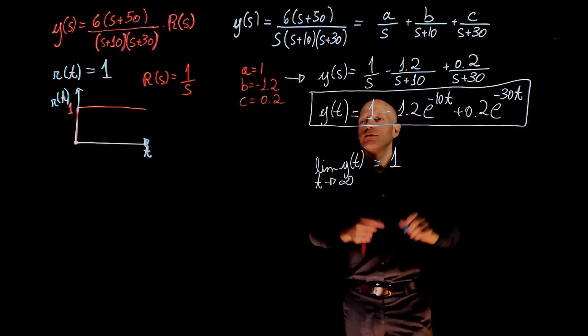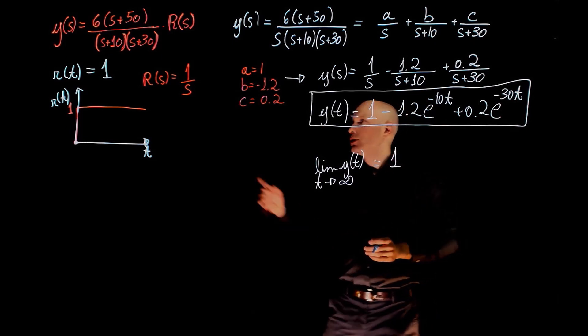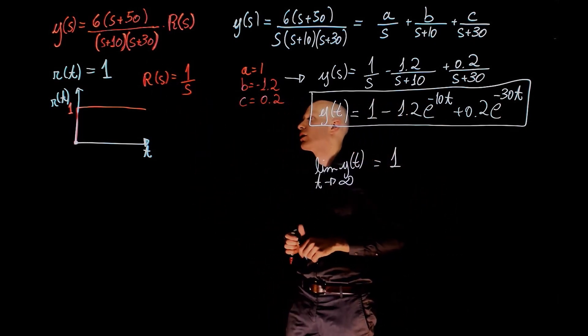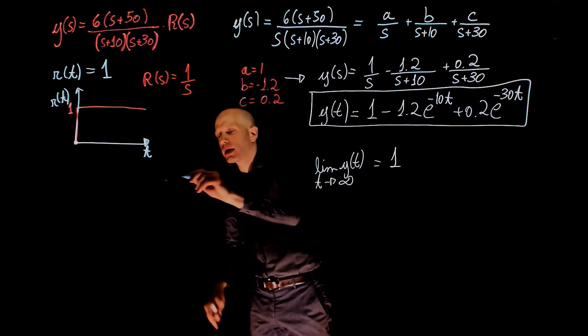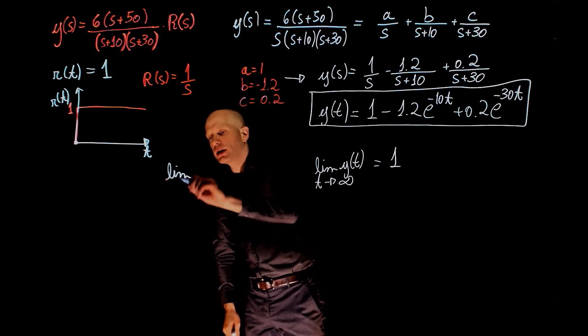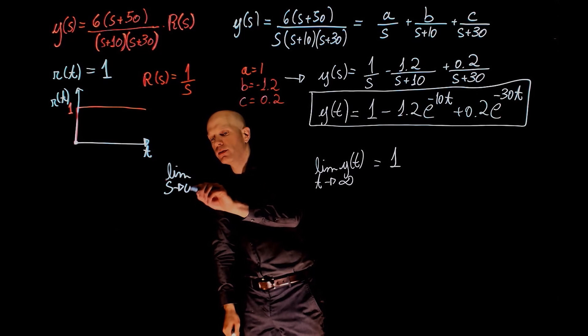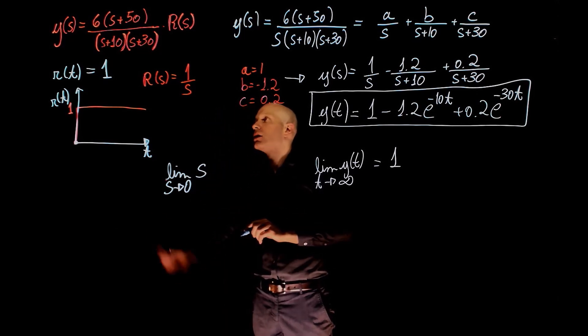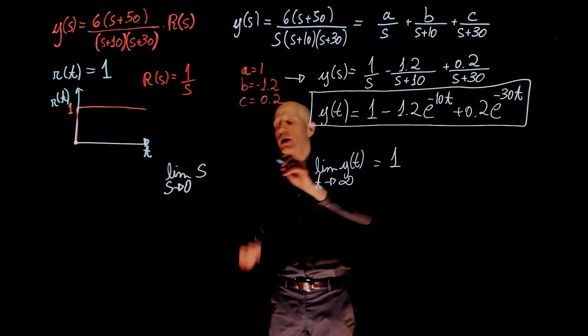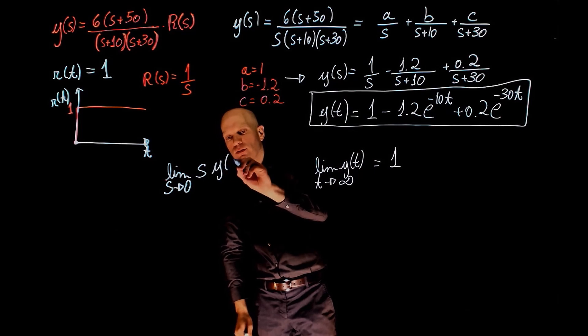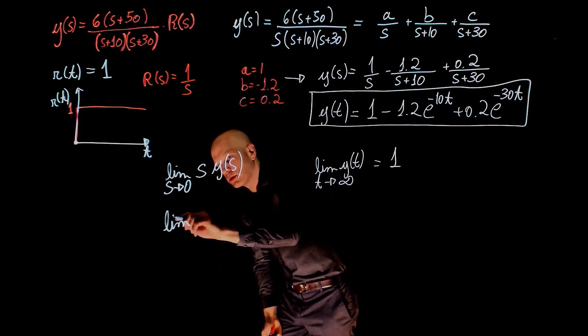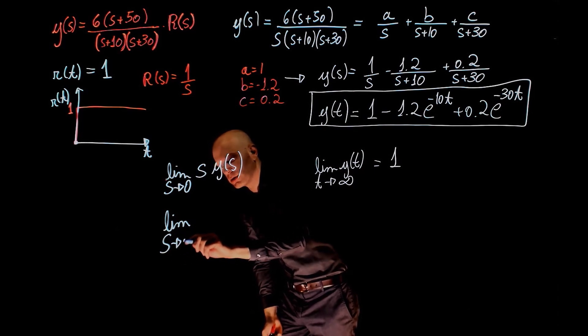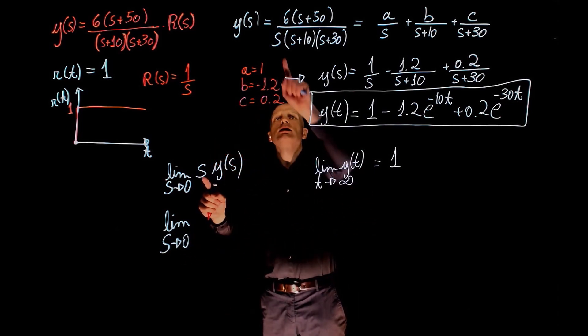If you didn't have the time response, we could look at the frequency expression and apply the final value theorem as the limit when s tends to 0 of s times y of s, which is the limit of s tending to 0. So, this s cancels that s,